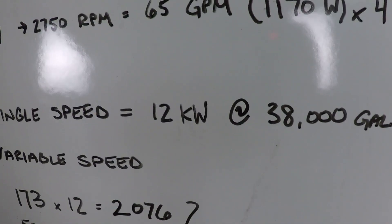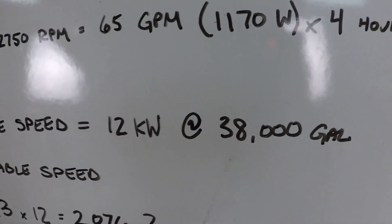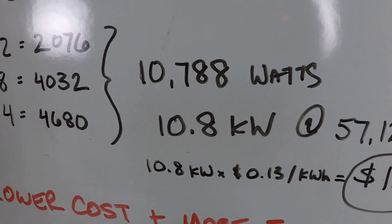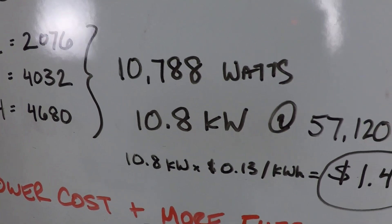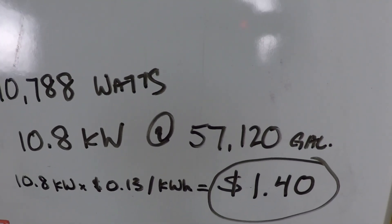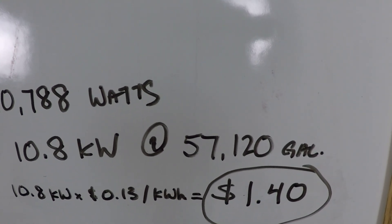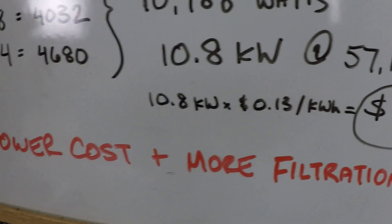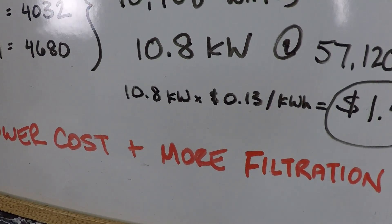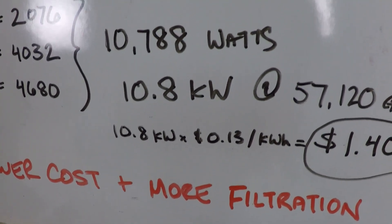There's your comparison right there. 12 kilowatts for 38,000 gallons of water versus 10.8 kilowatts, less power consumed, for 57,120 gallons of filtered water. Less power consumption, more filtered water, lower cost, more filtration. Seems like the answer is obvious. A definite win for variable speed pumps here.